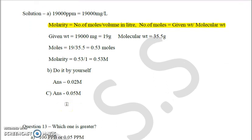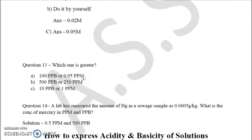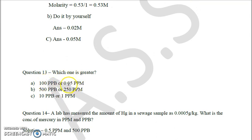There is a comparison question: which is greater, 10 ppb or 0.05 ppm? Since 1 ppm equals 1000 ppb, we convert 0.05 ppm to ppb: 0.05 × 1000 = 50 ppb. So 10 ppb is less than 50 ppb. In another case, 250 ppm is greater. In a third case, 1 ppm equals 1000 ppb, so 1 ppm is greater.